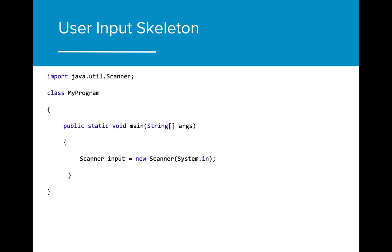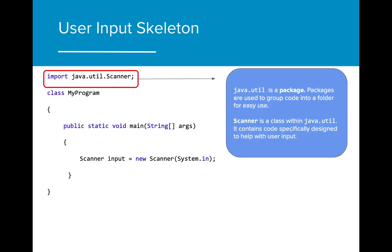In order to incorporate user input into our programs, we are going to have to add a couple of elements to our existing starter code in order to successfully receive input from our users. The first bit of code that is needed is the import statement. Essentially, this code is saying: import the class Scanner from java.util for use in this program. java.util is a package that stores various classes of code that are used to add functionality to our programs. In this case, we are using the Scanner class, which will allow for user input.